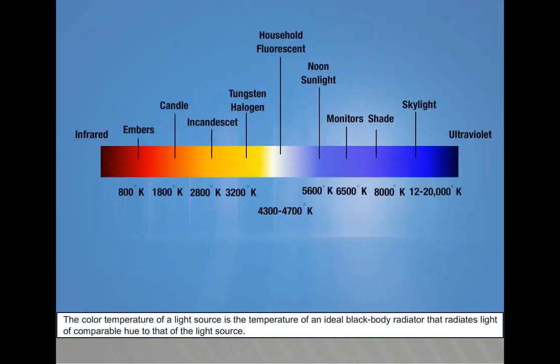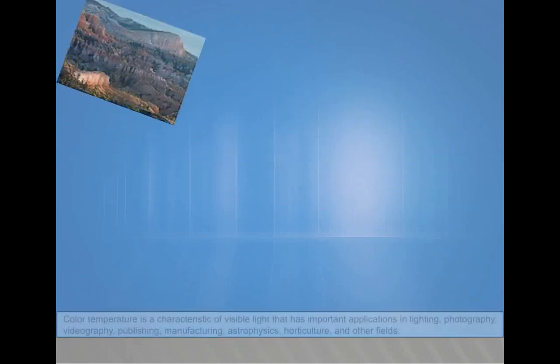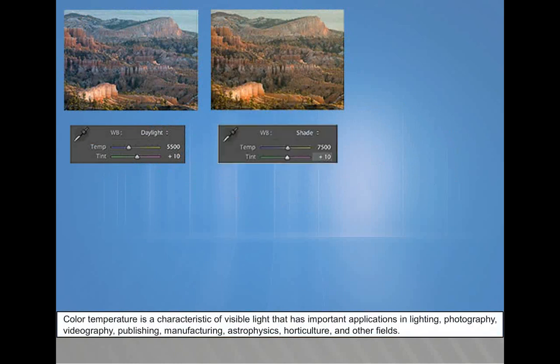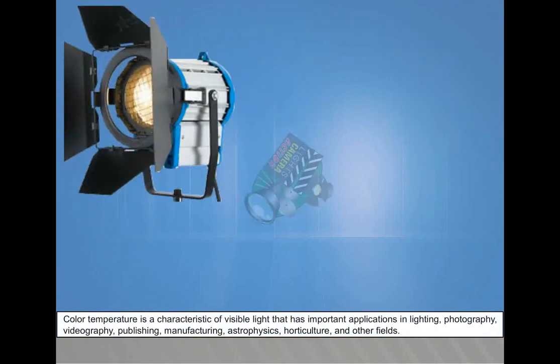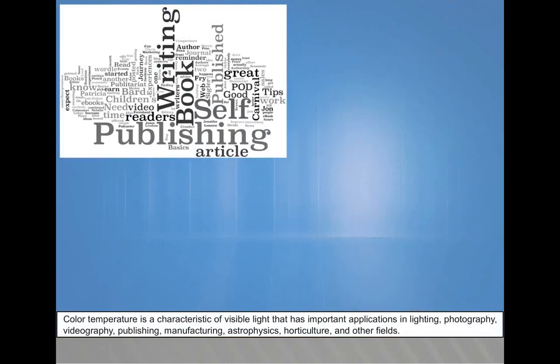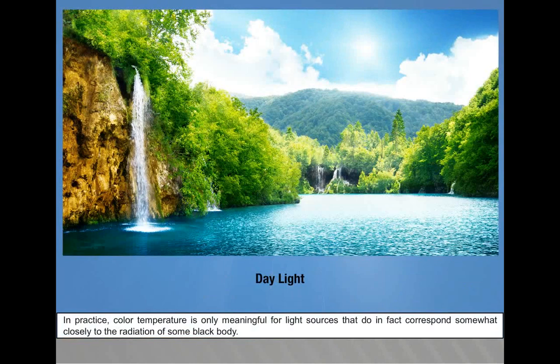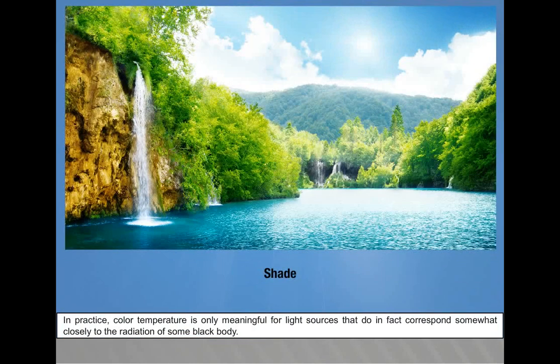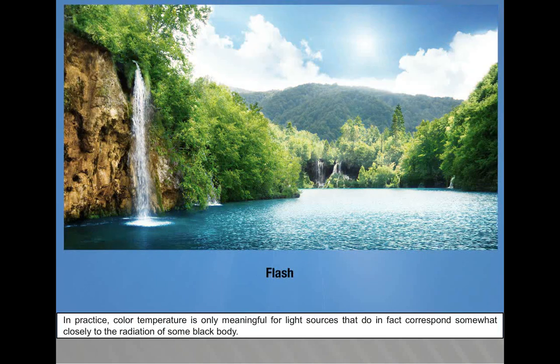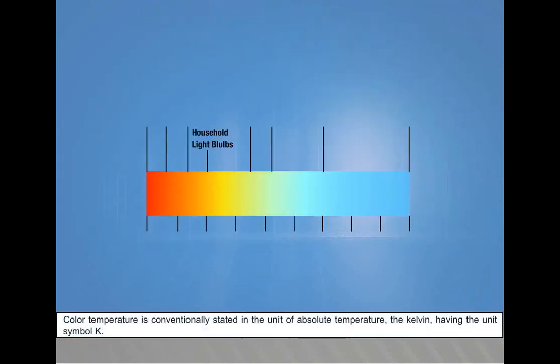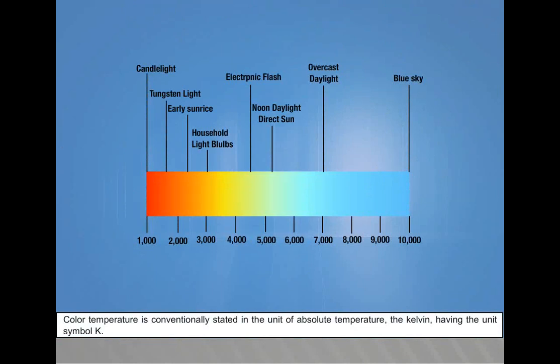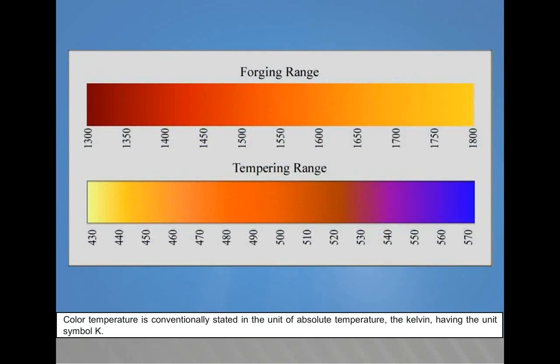The color temperature of a light source is the temperature of an ideal black body radiator that radiates light of comparable hue to that of the light source. Color temperature is a characteristic of visible light that has important applications in lighting, photography, videography, publishing, manufacturing, astrophysics, horticulture, and other fields. In practice, color temperature is only meaningful for light sources that do in fact correspond somewhat closely to the radiation of some black body. Color temperature is conventionally stated in the unit of absolute temperature, the Kelvin, having the unit symbol K.